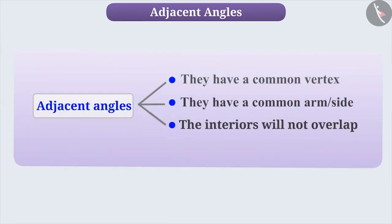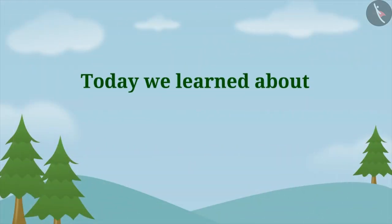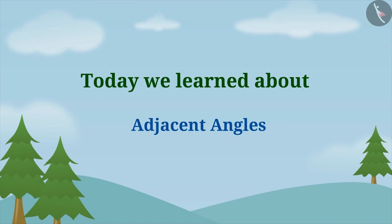Always remember that we can call any two angles Adjacent Angles only when they comply with all the three conditions. If even one of these conditions are not satisfied or false, the angles will not be called Adjacent Angles. So, today we learned about Adjacent Angles. In the next video, we will learn about Linear Pairs.